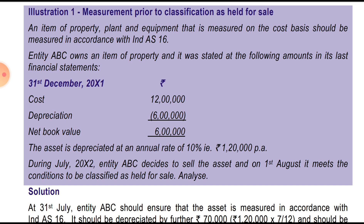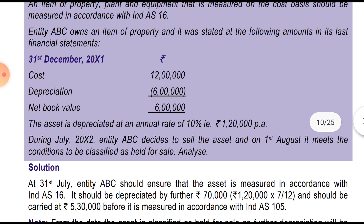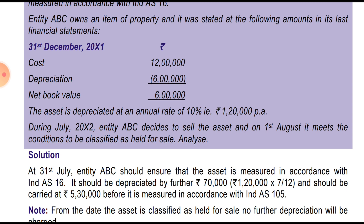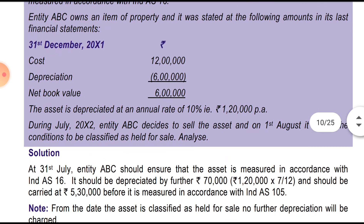Entity ABC Limited owns an item of property, plant and equipment. It was stated at the following amounts in its last financial statement dated 31st December — cost is 12 lakh rupees, depreciation is 6 lakh, and net book value is 6 lakh rupees. The asset is depreciated at an annual rate of 1 lakh 20,000 per annum.